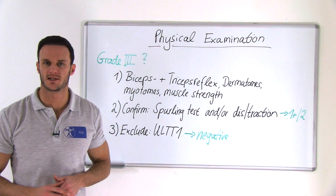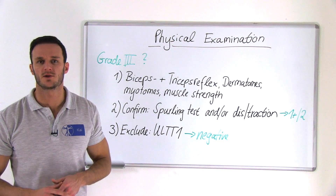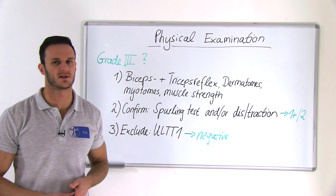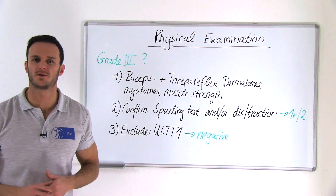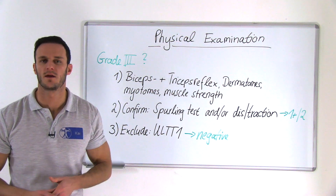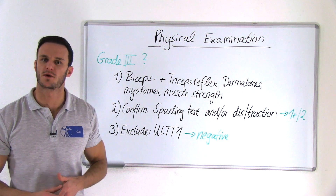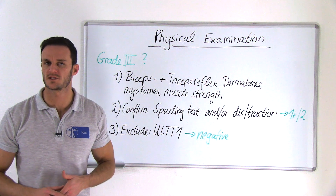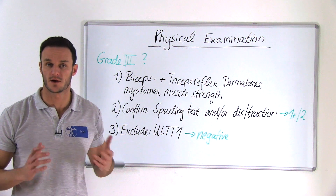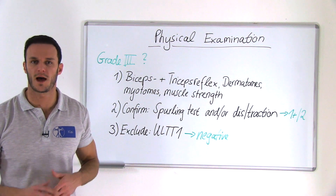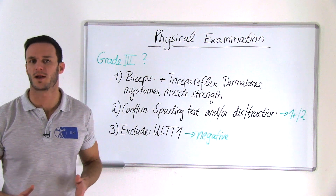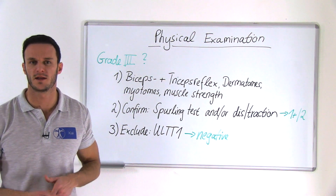To confirm your hypothesis of grade 3 neck pain, you should perform the Spurling's test and/or the traction or distraction test. If either of these tests is positive, you can regard grade 3 neck pain as probable. If there was no mention of neurological symptoms during patient history taking and you found no signs during your neurological examination, you can choose to do the upper limb tension test for the nervus medianus and the brachial plexus to exclude grade 3 neck pain.